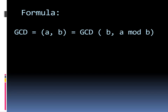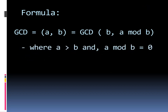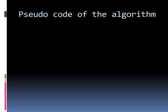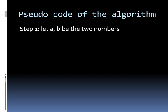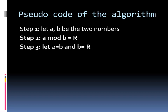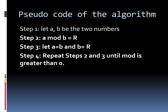The formula is: GCD(A, B) = GCD(B, A mod B), where A must be greater than B. Here is the pseudocode. Step 1: let A and B be the two numbers. Step 2: A mod B equals R. Step 3: let A equal B and B equal R. Step 4: repeat steps 2 and 3 until the remainder equals 0. Step 5: the GCD is equal to B.